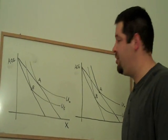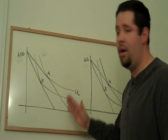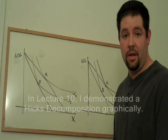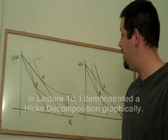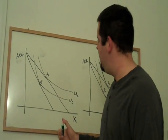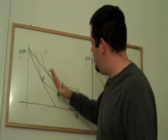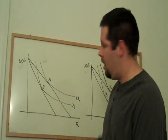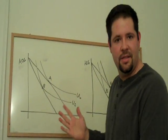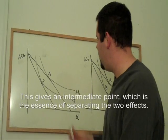In lecture 10, I showed how one would decompose this price change into an income effect and a substitution effect. We could decompose that price change by finding a budget line that's on our old indifference curve but has the same slope as our new budget line.